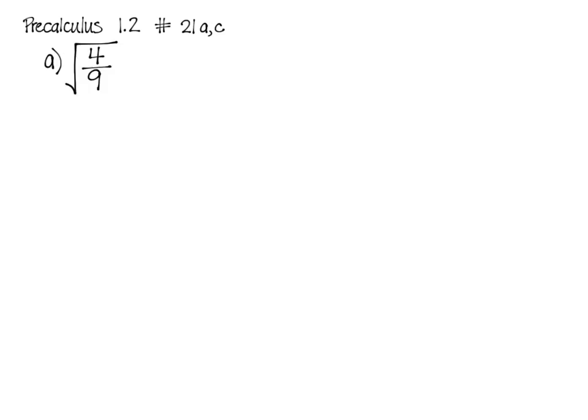In this we have a radical with a fractional radicand, and we're going to use the property where if you have a fraction under a radical, you can split that up and have the numerator under the nth root and the denominator under the nth root.